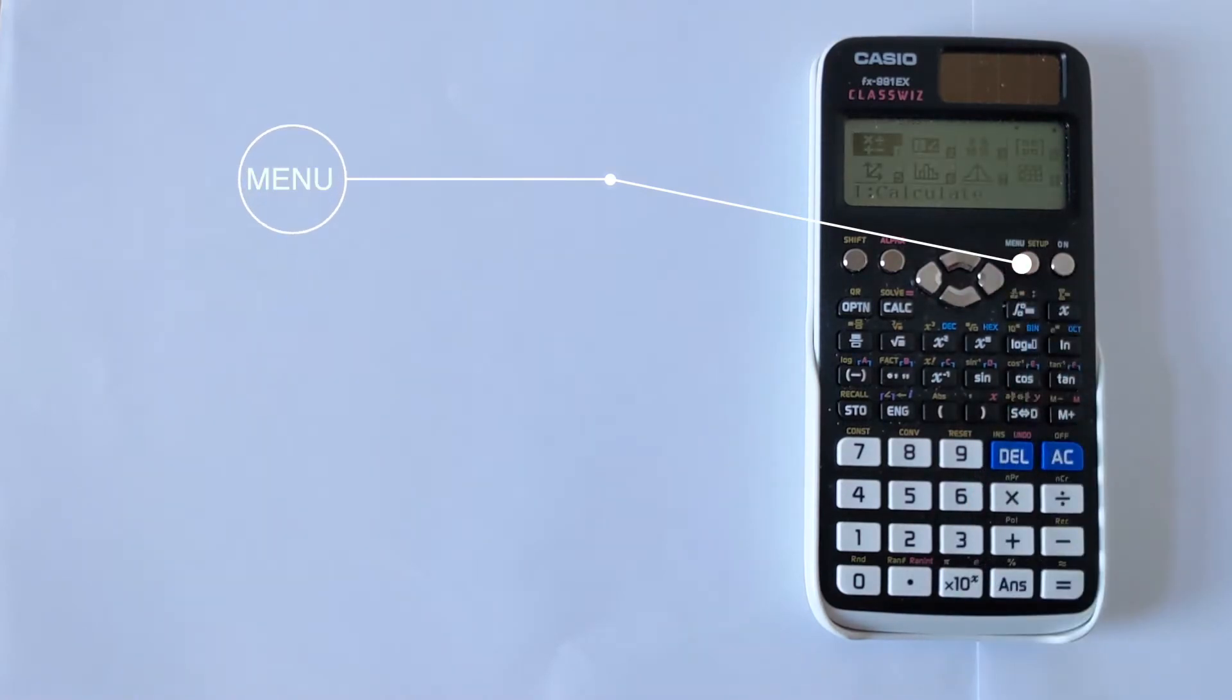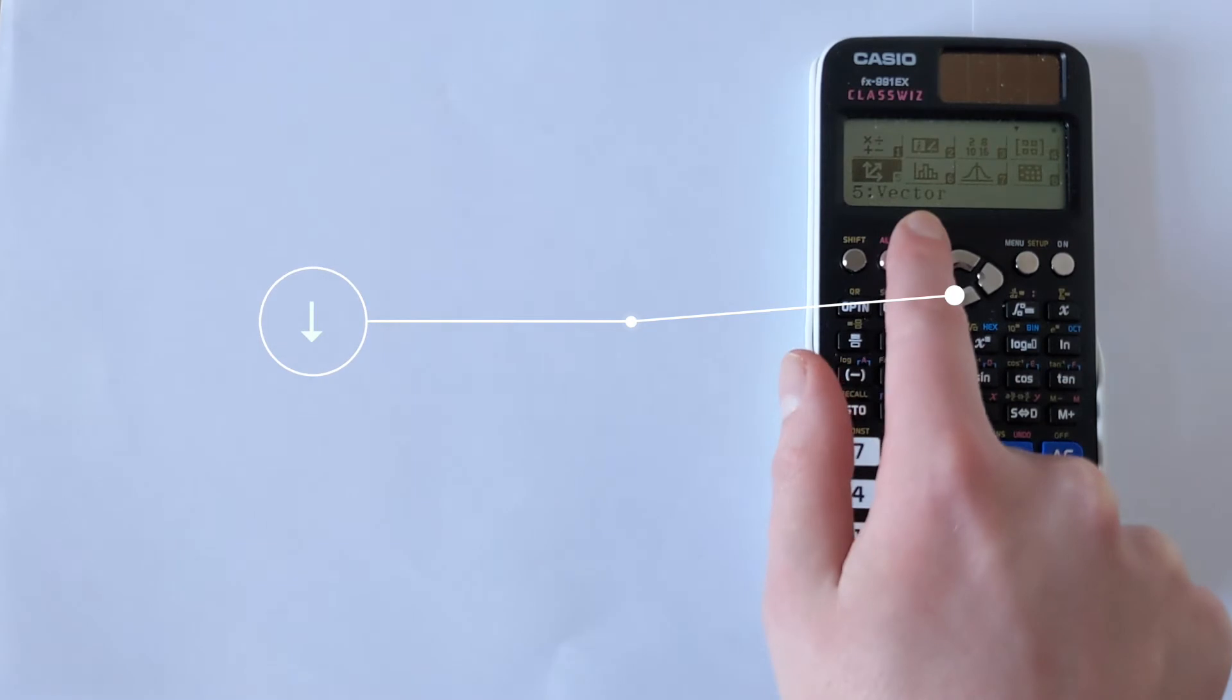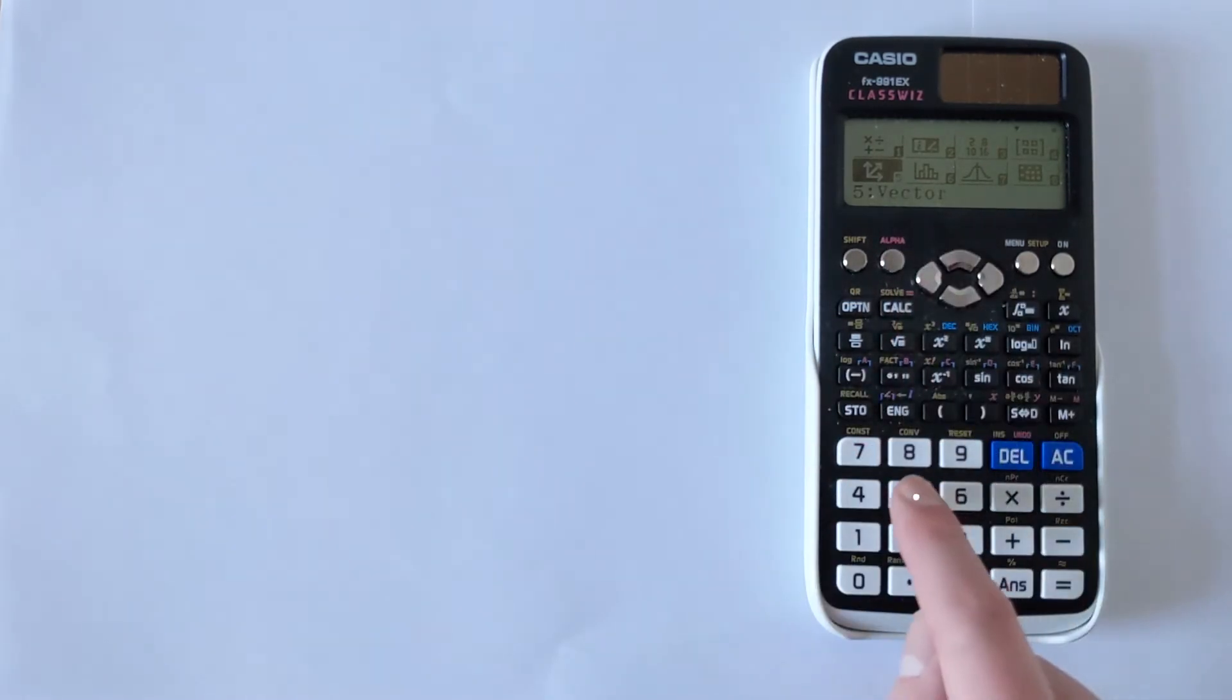We're going to press Menu, bring up the main menu. If you press Down, you get straight to Vector here, which is on option 5. If we press 5, you're now into the vector functions.